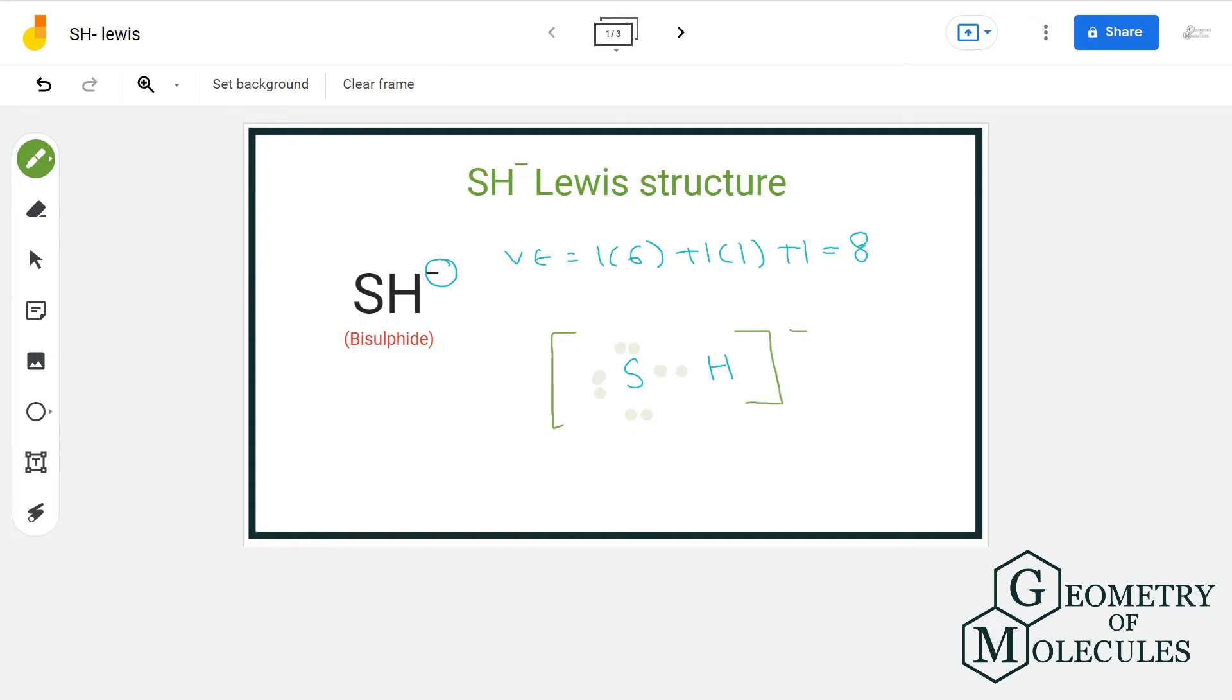You should remember that the sum of formal charges must be equal to the overall charge of the ion. So let us confirm that by calculating the formal charge of sulfur and hydrogen.